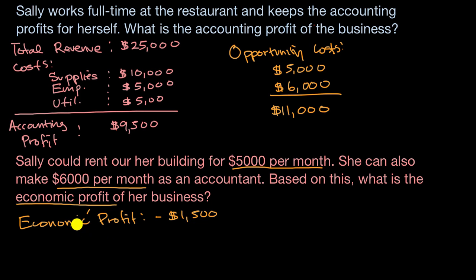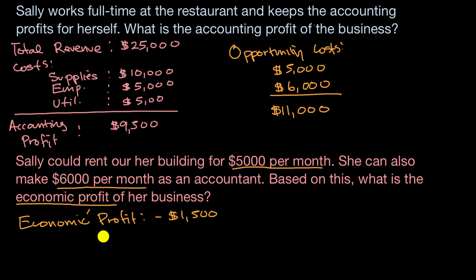It's important to realize that because economic profit always factors in both explicit costs and potential implicit costs, economic profit will never be higher than accounting profit. Assuming there are some implicit costs, it will always be lower. So based on all of this, it doesn't seem rational for Sally to continue running her burger business. She makes $9,500 in accounting profit, but she's incurring $11,000 of opportunity costs to do so — that's what makes her economic profit negative. This is not rational.